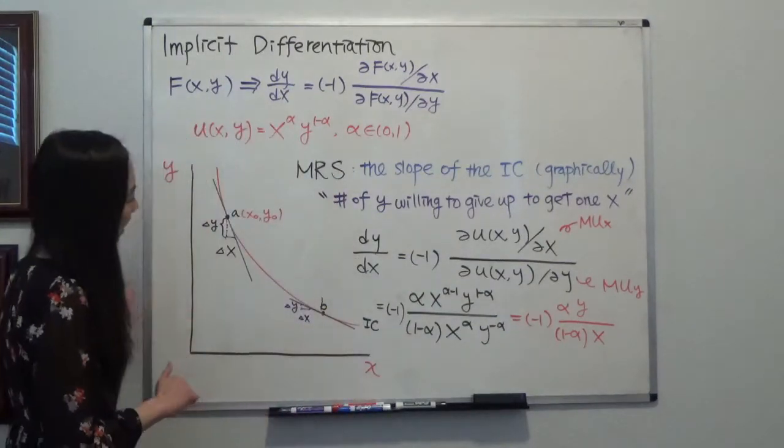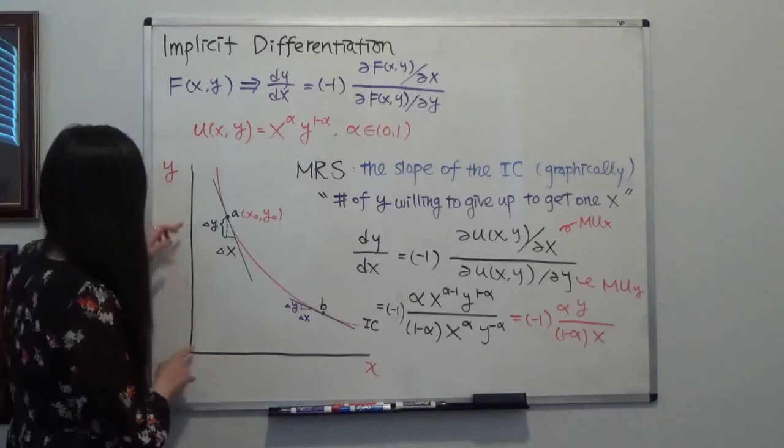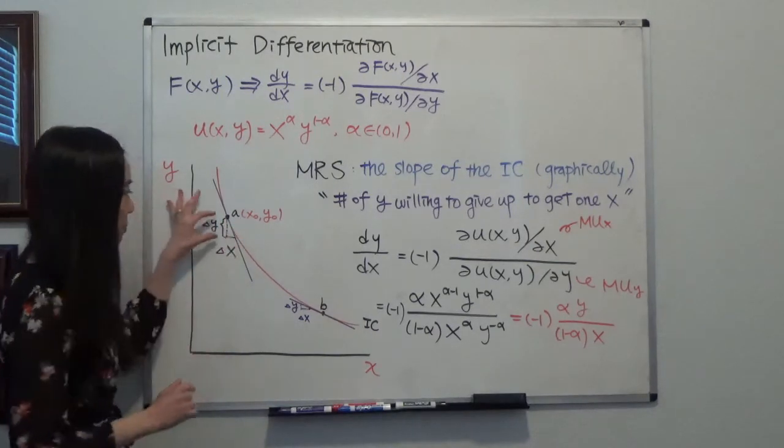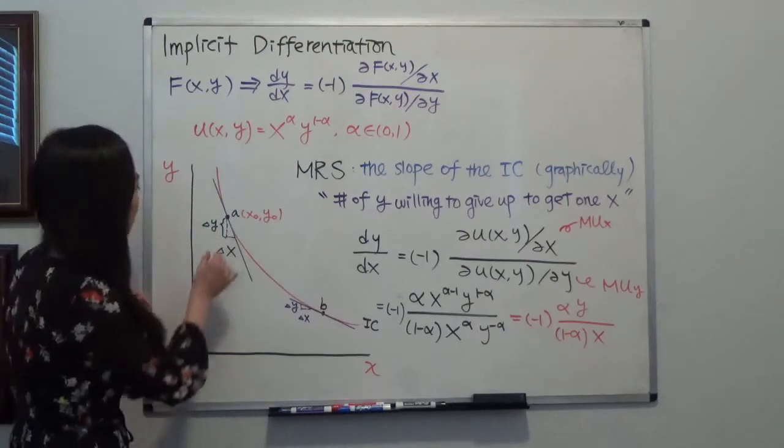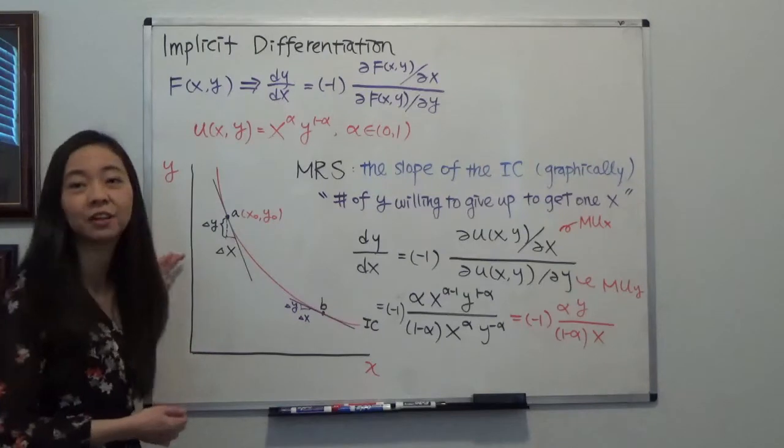So you can see that at point A, here you have very little x and more y. So at this point, you're willing to give up a lot of y in order to get one unit of x.